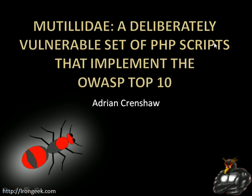As already indicated, my name is Adrian Doreen Crenshaw, and this particular presentation is about Mutillidae, a project I started up to easily demonstrate the OWASP Top 10 web vulnerabilities.